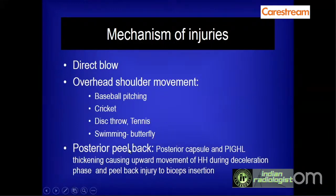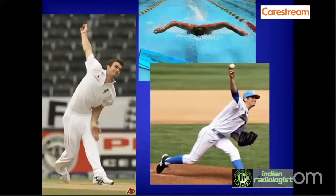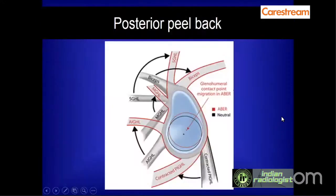The posterior peel back lesion is a special variety of SLAP lesion which will be dealt with in detail in subsequent slides. These are the various overhead shoulder activities and sports involving these activities which can make a person susceptible to the development of SLAP lesions.